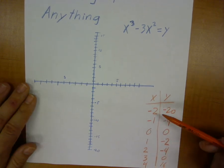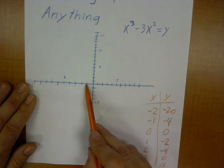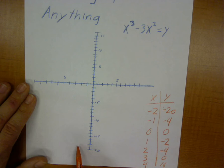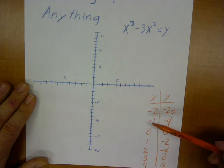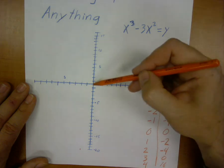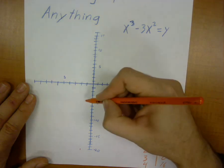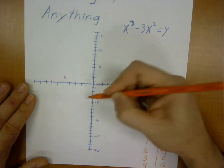Let's graph these points. Negative 2, negative 20. Negative 2 over, 20 down. We're looking right here. Negative 1 over, 4 down. We're looking right here.